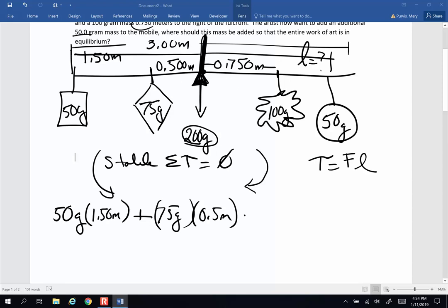So now let's work on the torques on the right side. On the right side, I'm going to have 0.75 meters times 100 grams plus 50 grams times an unknown lever arm, L.